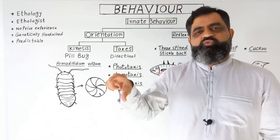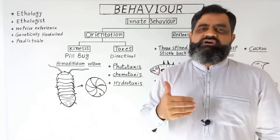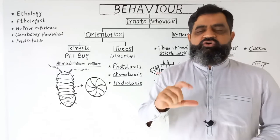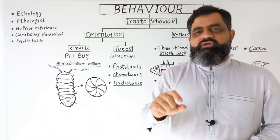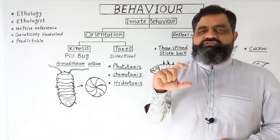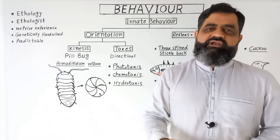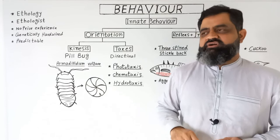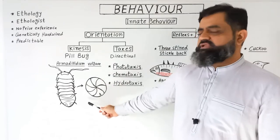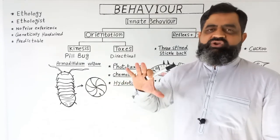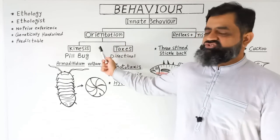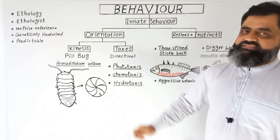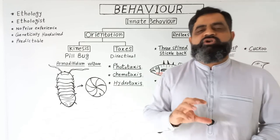The pill bug will move first towards the east, then towards the west, then north, then south. Whenever it finds wet soil, mud, or a small amount of water, it will stay there and start living there. This behavior is very important for the survival of these animals, it is present in their genes, and it is known as innate behavior — specifically orientation and kinesis.